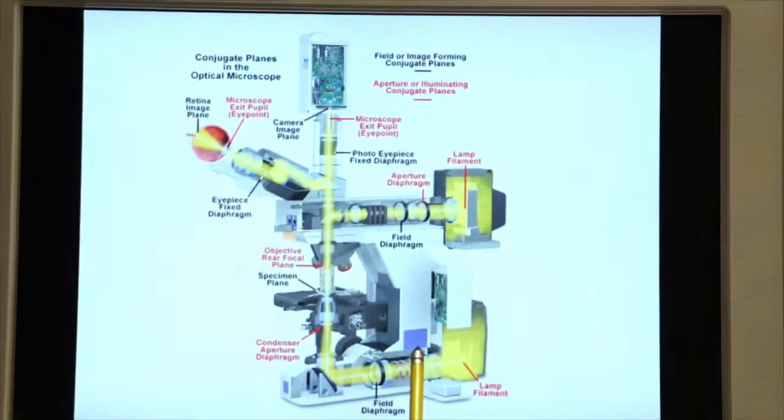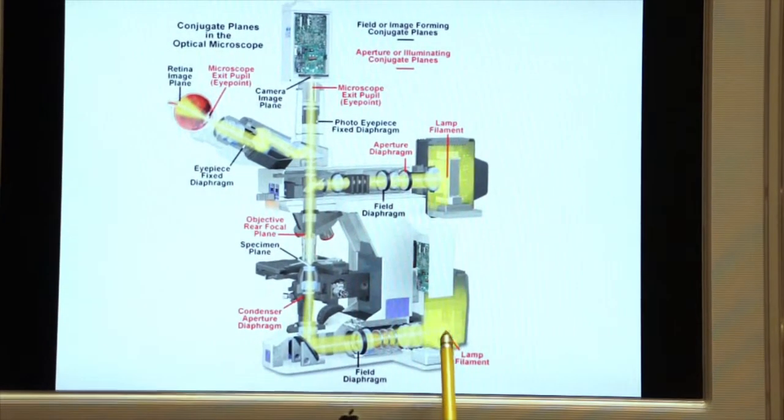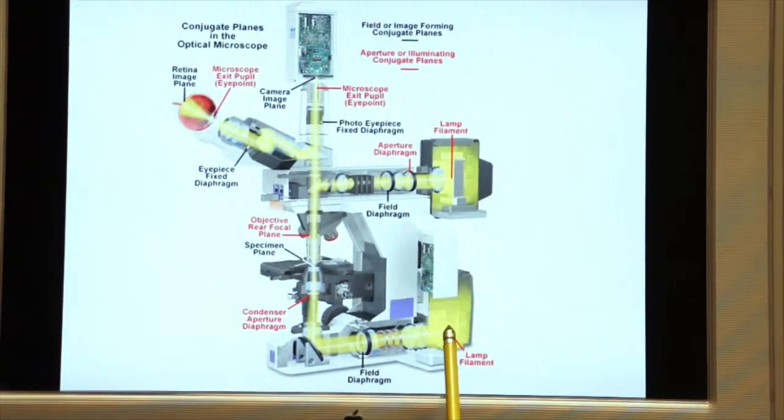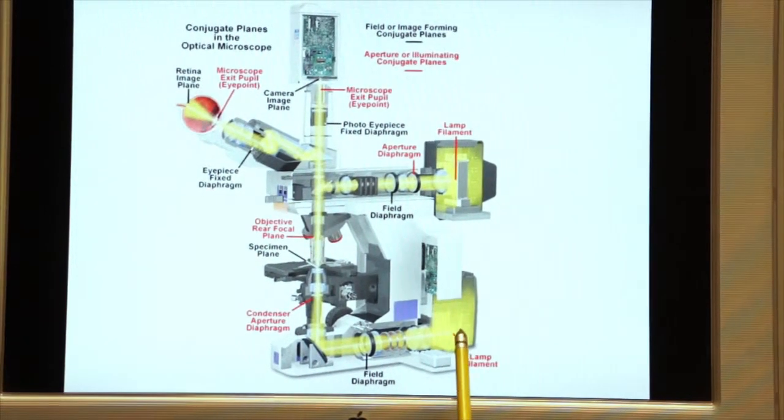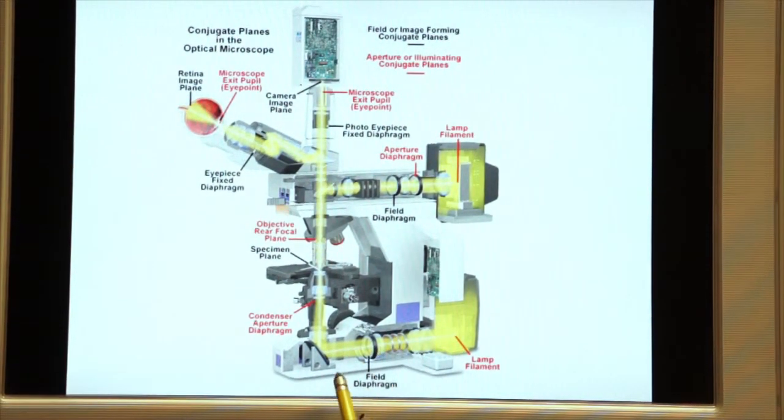Here you see the compound microscope with the transmitted light illuminator, so we have a tungsten halogen bulb in the transmitted light illuminator that sends light through the base of the microscope.